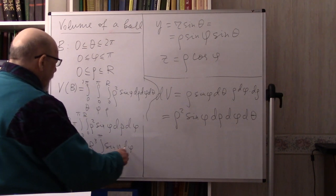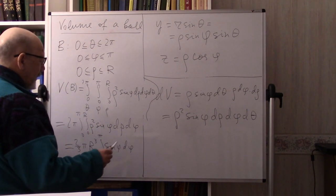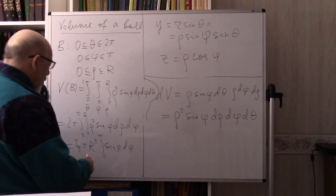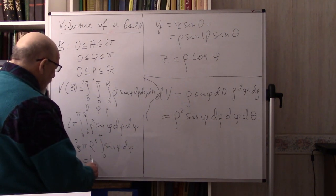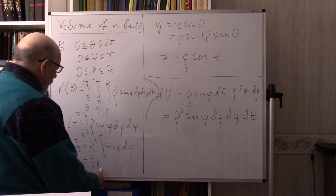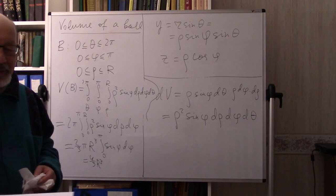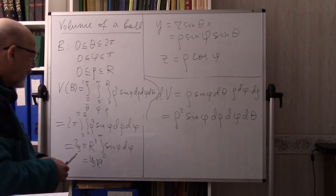The integral of sin φ from 0 to π is the change of cosine from π to 0, which equals 2. So the result is (4/3)πR³. Congratulations — this is correct!